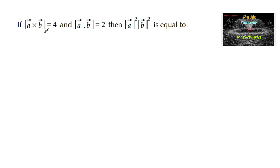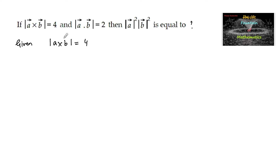If mod of a cross b is equal to 4 and mod of a dot b is equal to 2, then what is mod of a square into mod b square? Given: the magnitude of the cross product of two vectors is 4, and the magnitude of the dot product of two vectors is 2. Let us square and add equations 1 and 2.